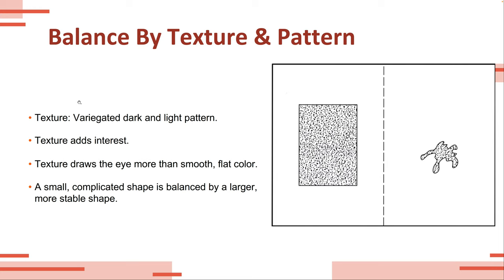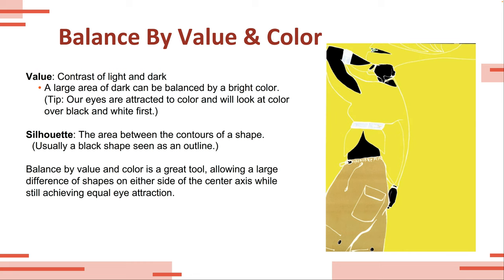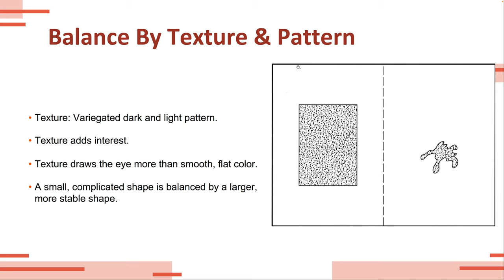Balance by texture and pattern — texture adds visual interest to any object and will draw the eye more than smooth or flat color. A more complicated shape is going to have a little bit more visual weight. So this small complicated shape has just about the same visual interest as a larger, more simple, stable shape, even though they have the same texture.